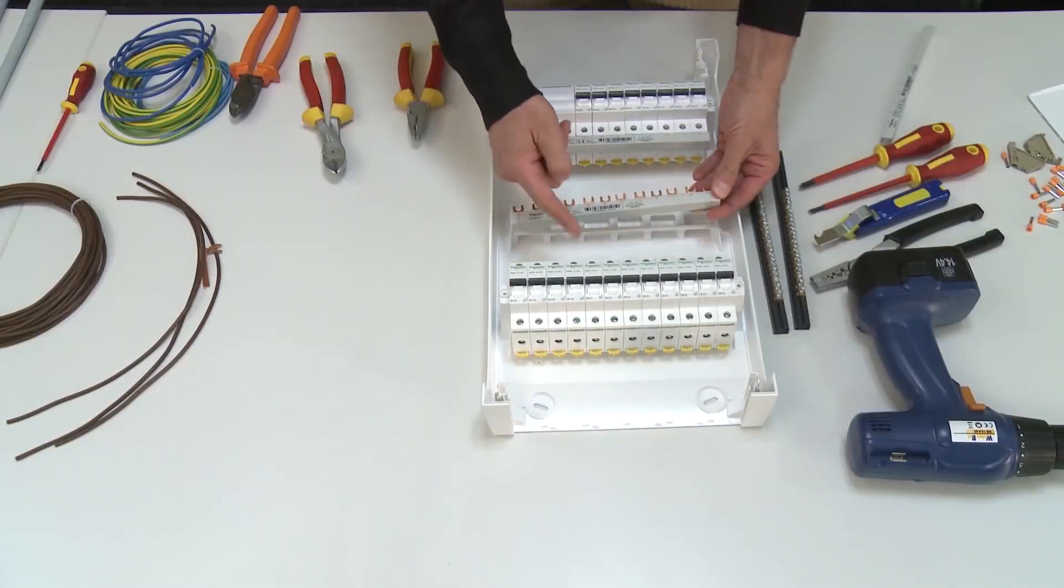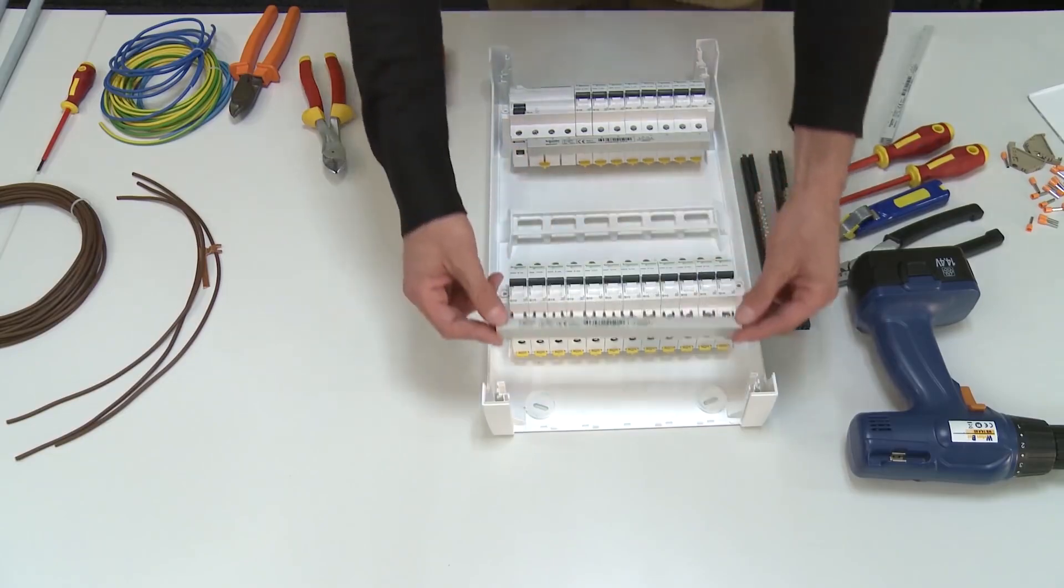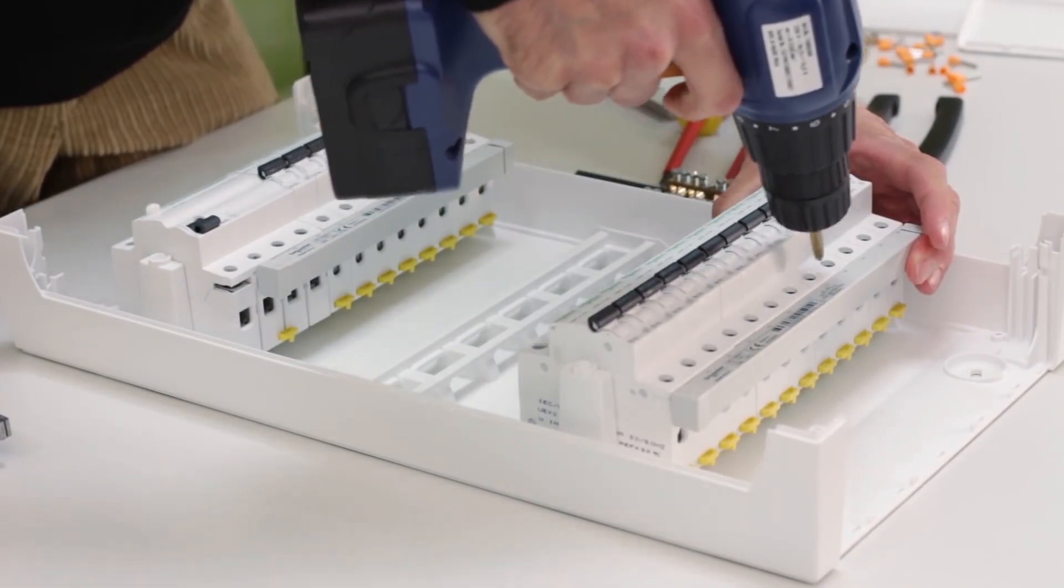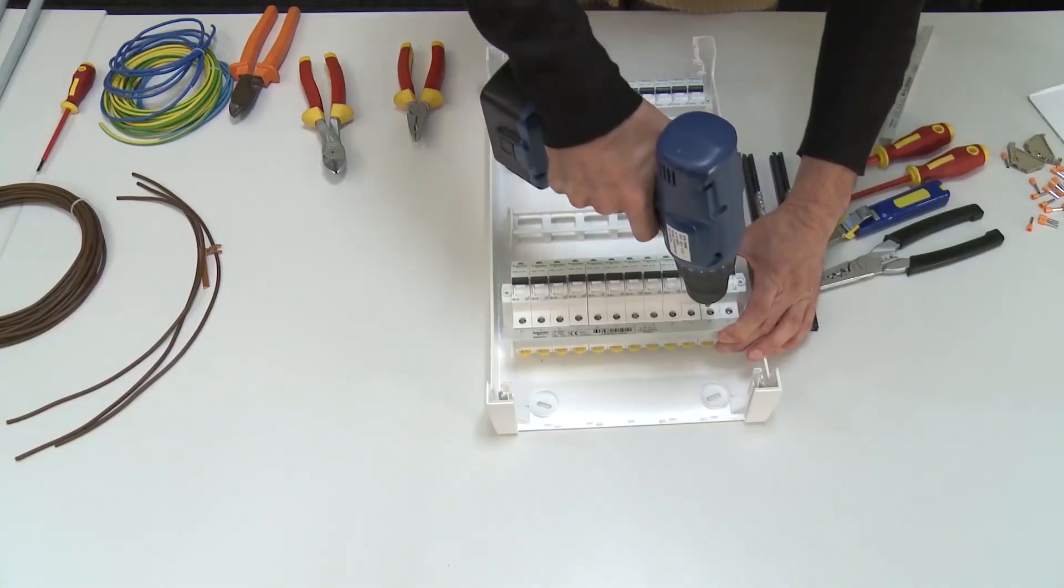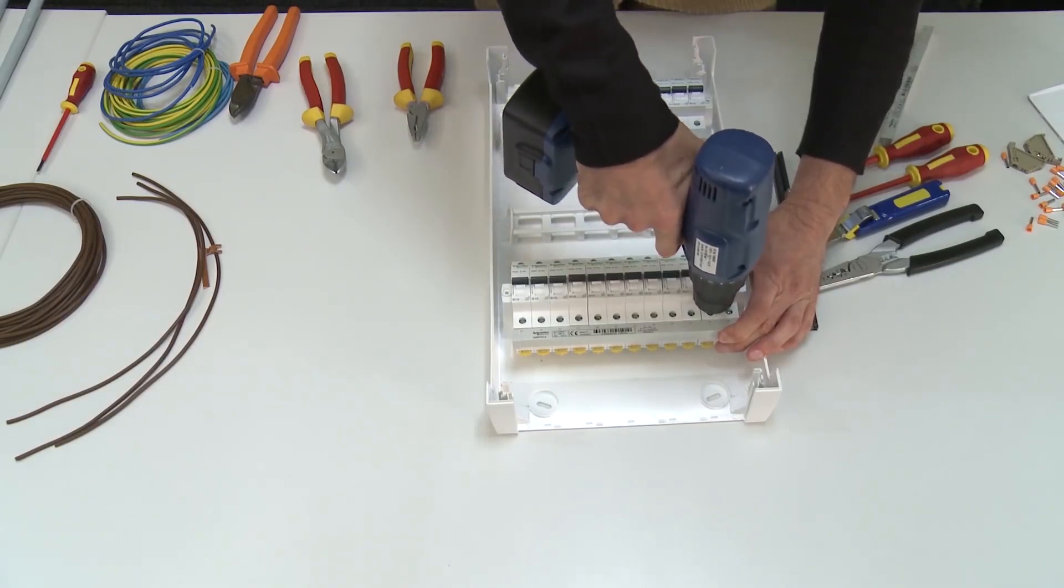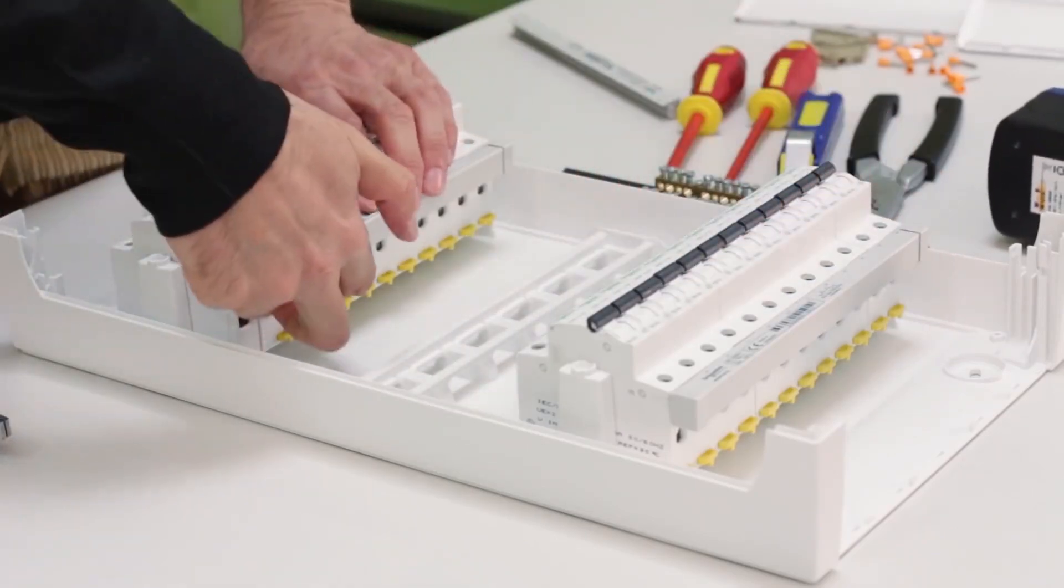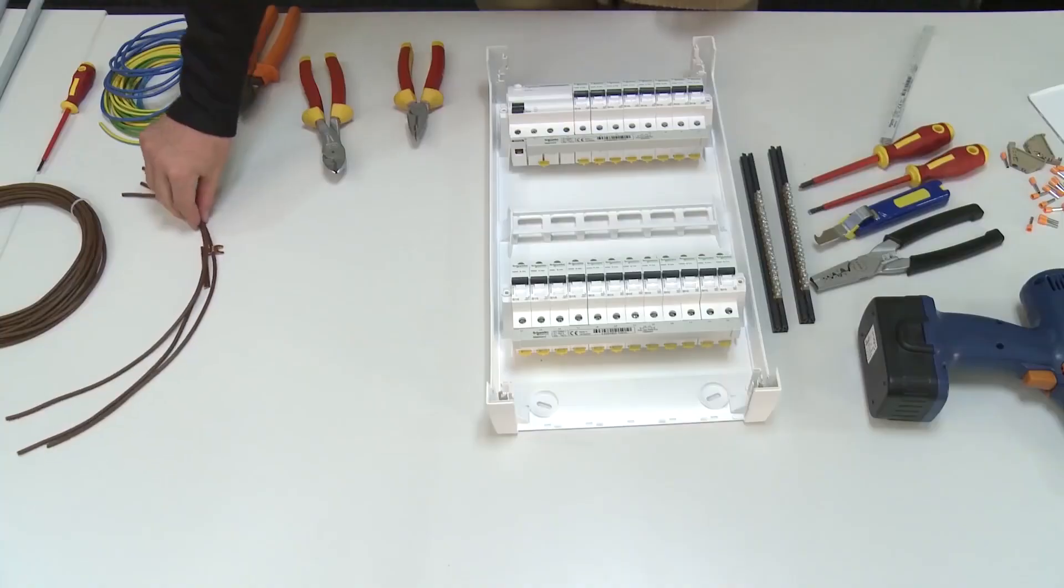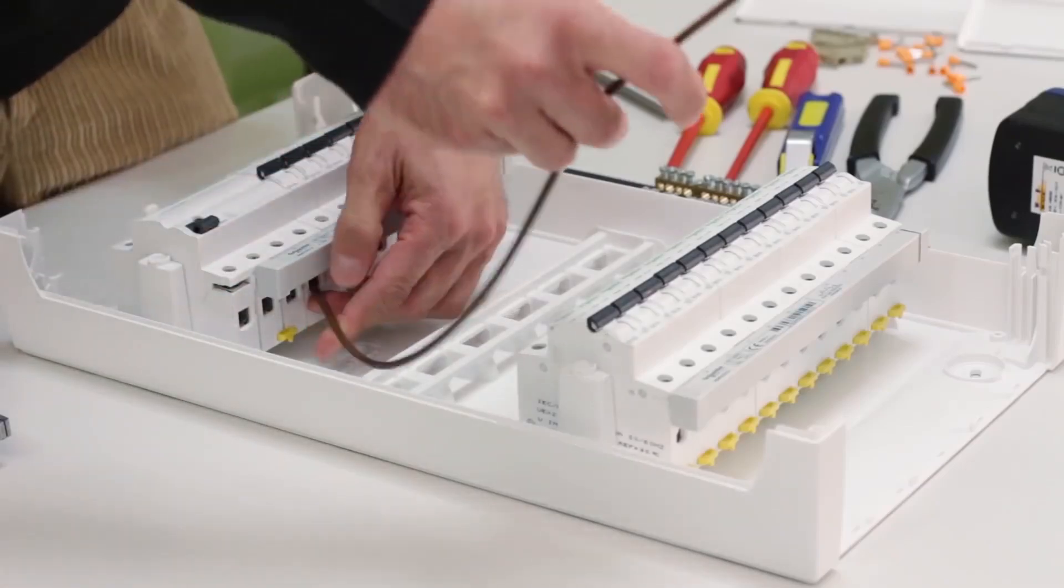To power the lower part of the equipment, a standard Lancome bus bar of 12 modules is suitable. We will skip these three circuit breakers because we will bring the power from the RSD device. We will prepare the conductors with which we will supply power.